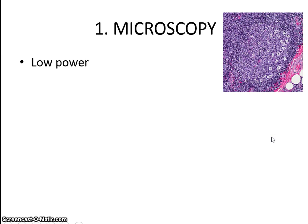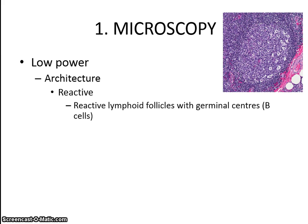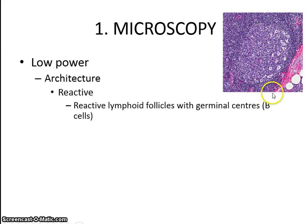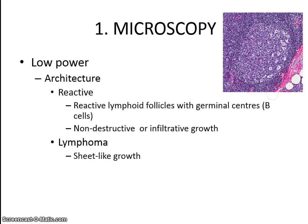On low power microscopy, we focus on architecture. In reactive lymphoid proliferations, we will see reactive lymphoid follicles with these pale germinal centers. This whole reactive follicle is composed mostly of B cells, or B lymphocytes. There will be a non-destructive or infiltrative growth pattern, as compared to lymphomas, where there is a more sheet-like cellular proliferation, and there may be a destructive growth, or the lymphoid proliferation may infiltrate into the adjacent tissues.